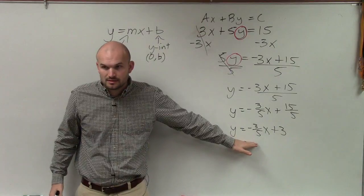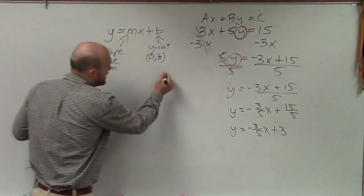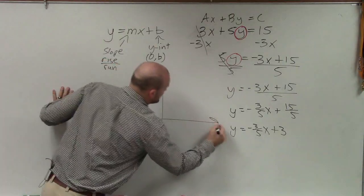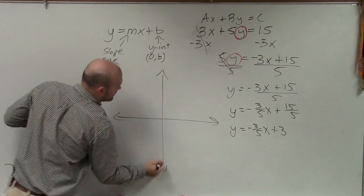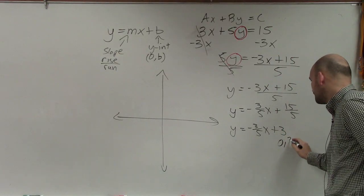Now, can we go ahead and graph this? Yes. Can we graph it faster? Yes. So now, using my slope-intercept form that I have over here, I determine my y-intercept, which is 0, 3.